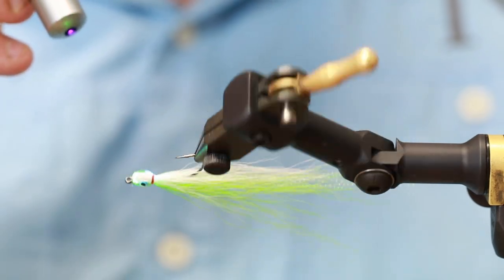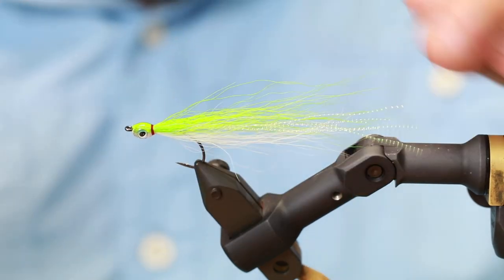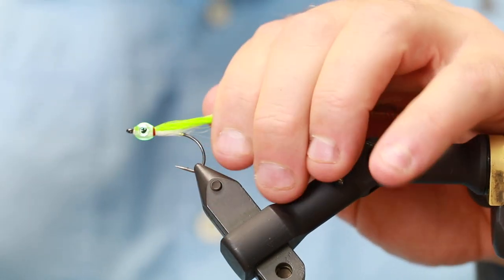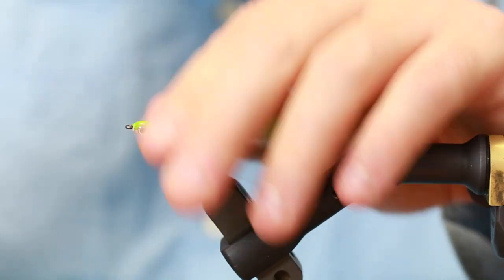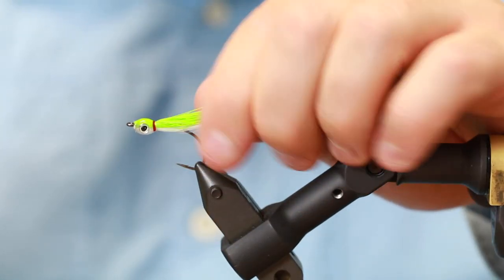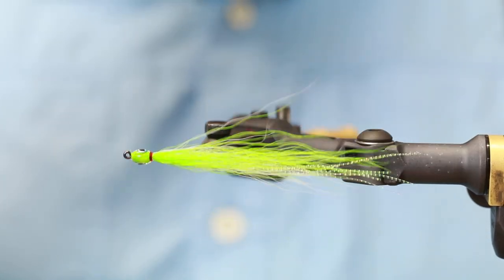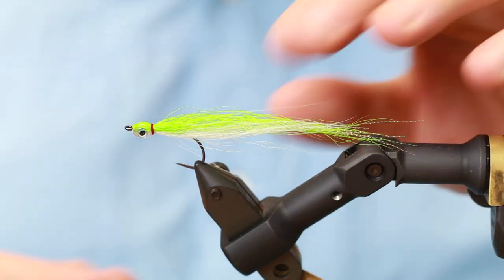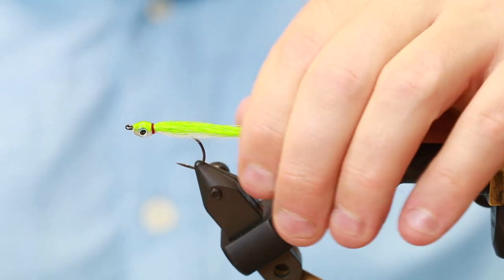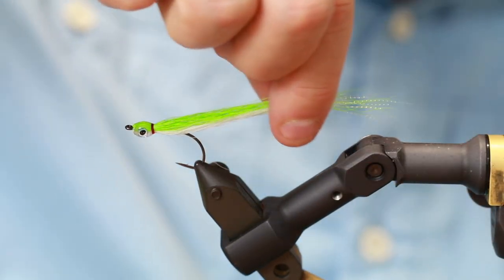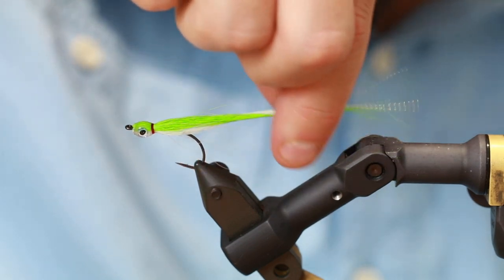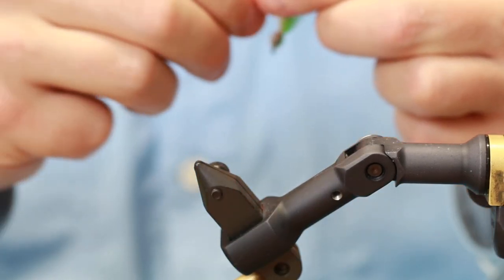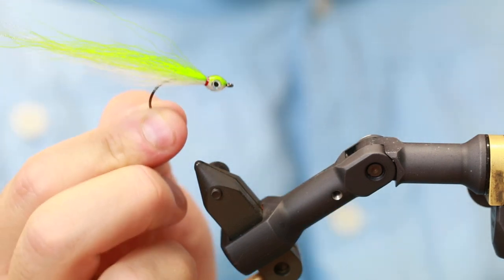I have that now, so now I shine the light and my Thunder Creek fly is done. As I said, you can do this in any colors—the blue and white looks really good for sardines, the pink one is a good stimulator for getting a lot of attacks. So hey, do these Thunder Creeks in any color combination that you like. They're fast, they're easy, and they fish really well. They're also not that expensive in materials, but they just look like food in the water and the fish will grab these. So there you go.